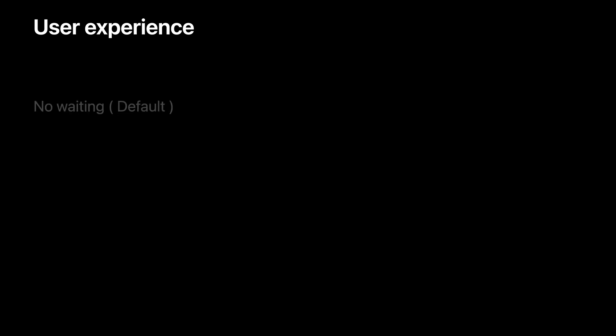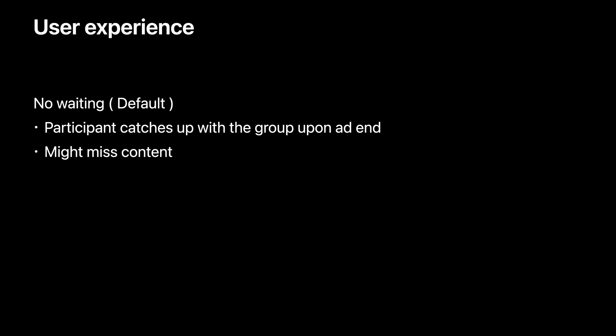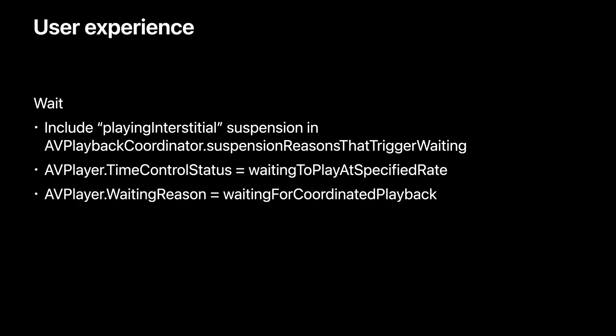Now how would you enable these experiences? You can specify these waiting policies at the AV playback coordinator by how you populate the suspension reasons that trigger waiting array. The default behavior is for the group to not wait while some of the participants are watching ads. When these participants finish their ads, they would miss some content to catch up with the rest of the group. If you wish for the group to wait while the participants watch ads, you can simply include the playing interstitial suspension reason as part of the suspension reasons that trigger waiting array. With this policy, when a participant is waiting for the others to complete their ads, their player's time control status would be waiting to play at specified rate, and the waiting reason would be waiting for coordinated playback.